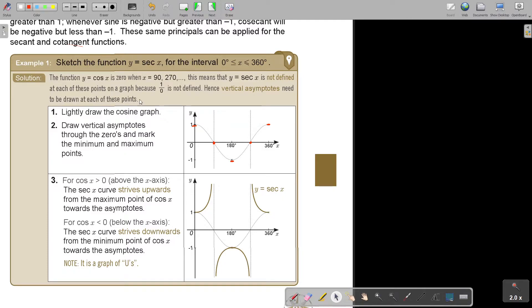So there where you see 0, you can already draw your vertical asymptotes. Now, lightly draw the cosine graph. That's how I do it, just lightly. Then draw the vertical asymptotes through the 0 and mark the minimum and maximum points. So there's the vertical asymptotes. This is the maximum points and this is the minimum points. I'm going to mark it with another color.